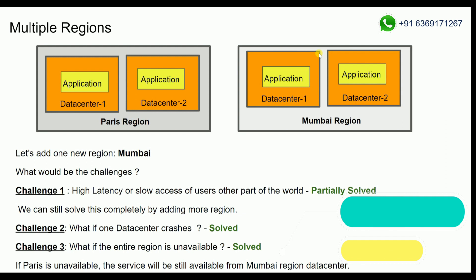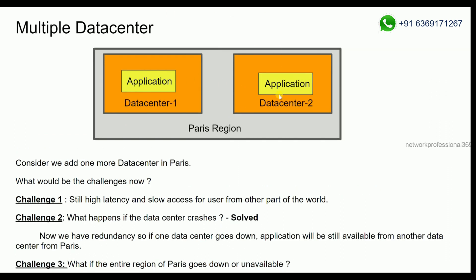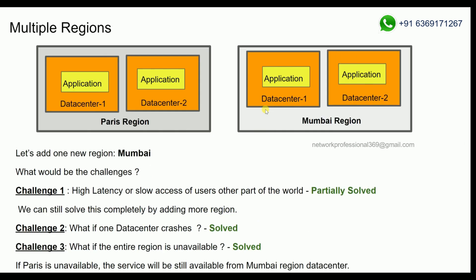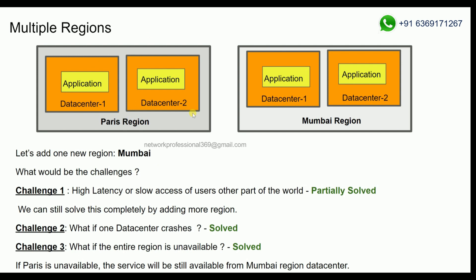So in this scenario, my application will not go down. If one region with multiple data centers is down, the application will still be available. My application will be in two regions — Paris and Mumbai, India. For any reason, if there is a global outage and the entire Paris goes down, my application will still be operating and available from the Mumbai region. So we can solve Challenge 3.